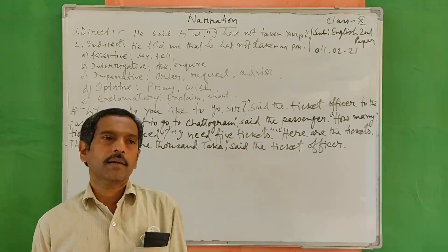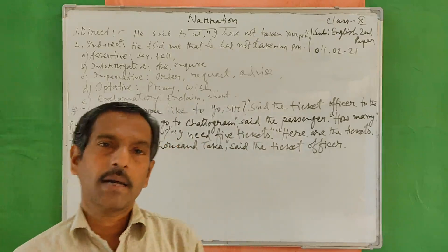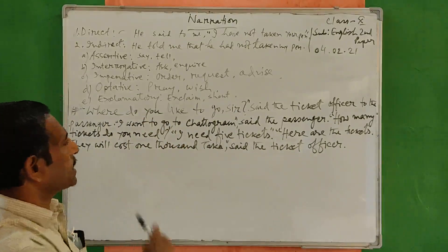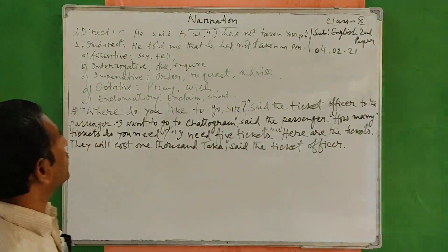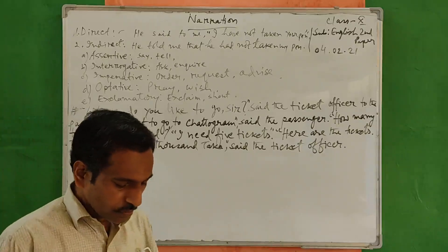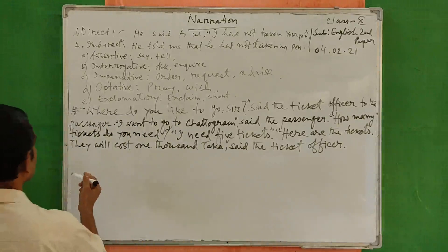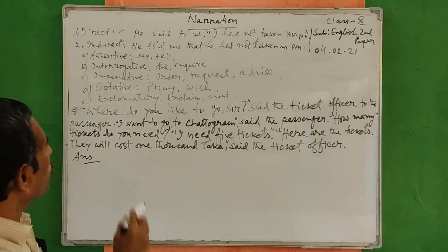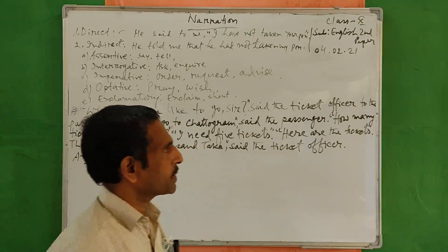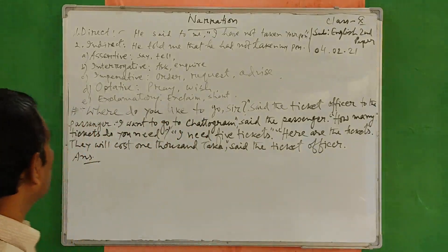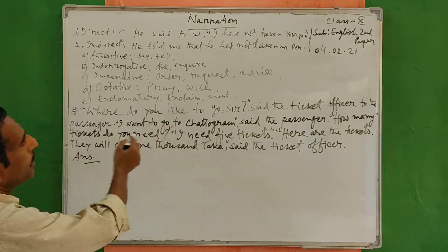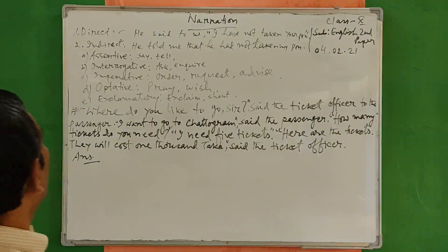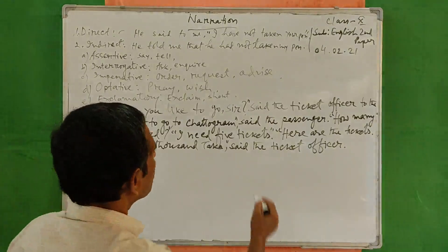We have to answer which type of narration is used in the exam. Here is an example of basic narration — we are changing it from direct to indirect. The first sentence is: 'Where do you like to go, sir?' said the ticket officer to the passenger. The reported speech is an interrogative sentence, so we will use 'ask' as the reporting verb.